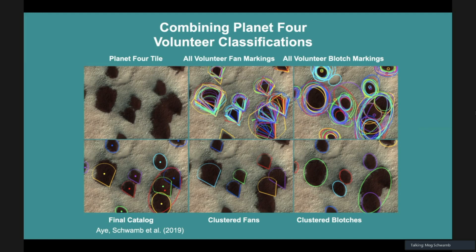I want to highlight that proof's in the pudding. I can tell you that that works, but I should be able to back that up. This is a sub-image from HiRISE. This is one tile we call it in Planet 4 that we had volunteers mark. In here, you'll see these are all the fan markings from the volunteers. Different color represents a different volunteer.